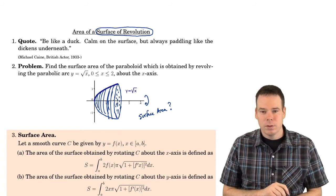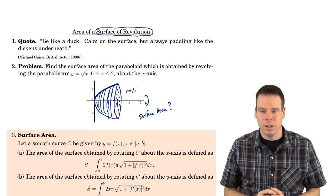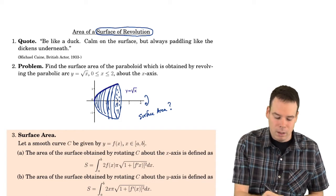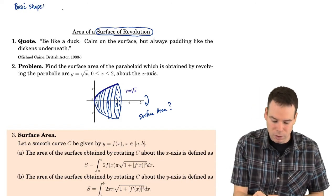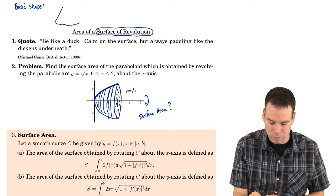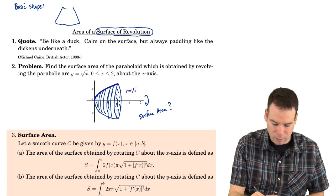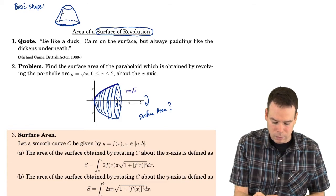For surface area, we're going to again have to start with some basic shapes that we know the surface area of, and then use those as our building blocks. The basic shape we're going to work with is what's called a frustum of a cone — a cone where you've cut the top off. So we have a circular bottom, circular top, and we're interested in the surface area of that.